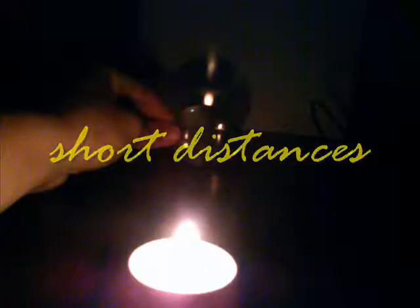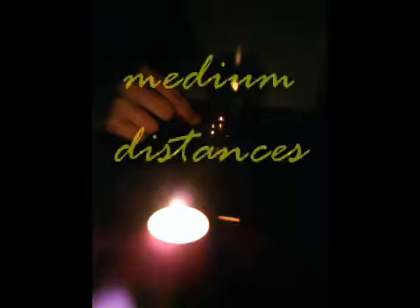Next, light the candle and adjust the distance from the convex lens to the flame (U) and the distance from the lens to the screen where the image is projected (V) so that a clear image appears on the screen.